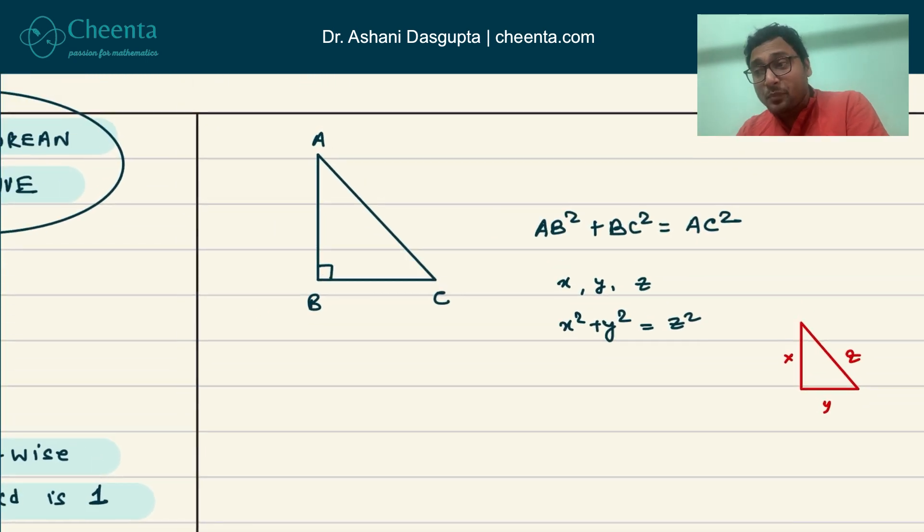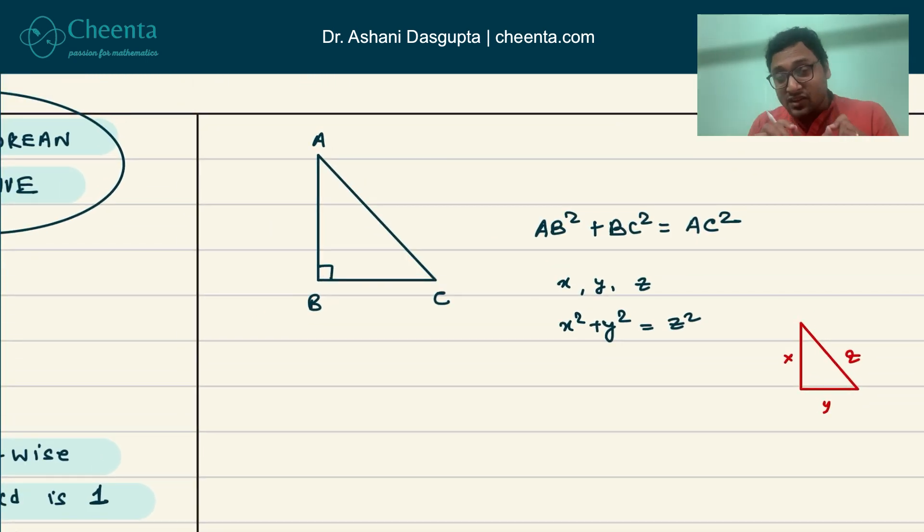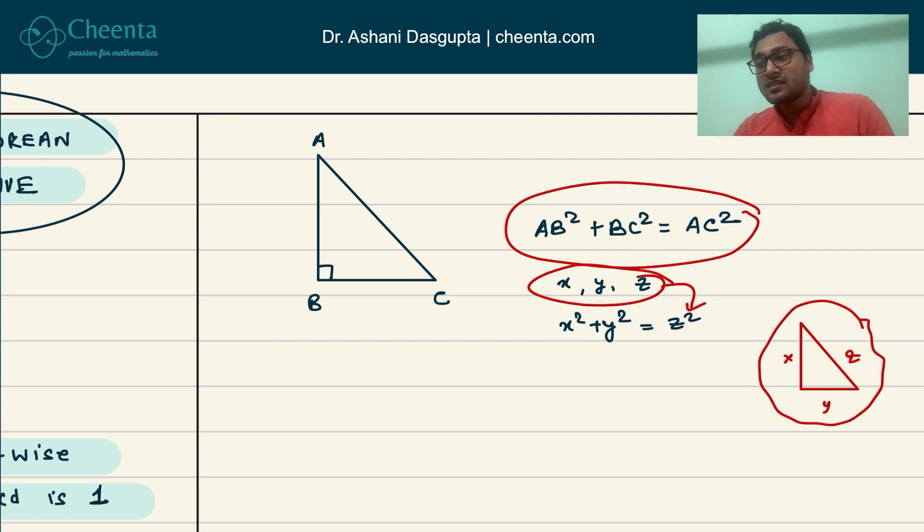It's very important that we make the distinction between the theorem and its converse. The theorem says that in a right angle triangle this property holds. The converse says that if we have three numbers where this numerical property holds, then you can actually create a geometric figure such that the hypotenuse is Z.